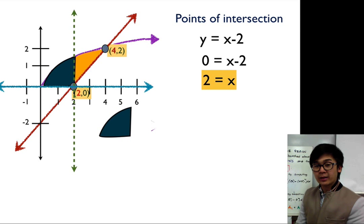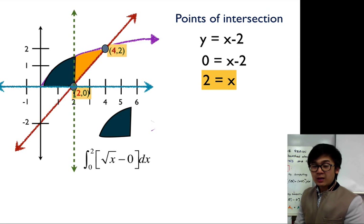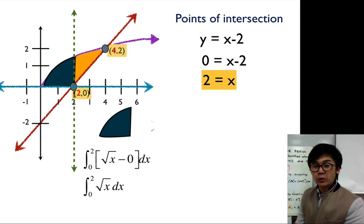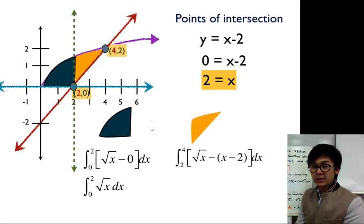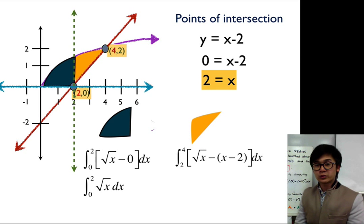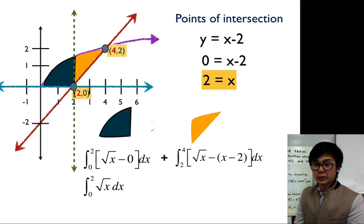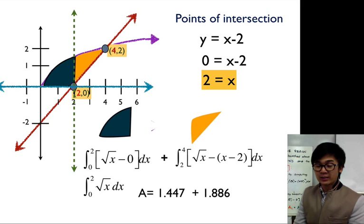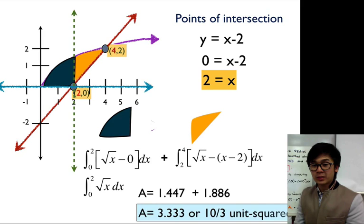To find the area of the left sub-region: integrate square root of x minus 0 dx from 0 to 2. For the right sub-region: integrate square root of x minus (x minus 2) dx from 2 to 4. Evaluating both definite integrals gives 1.447 plus 1.886, for a total area of 3.333 or 10/3 square units. That's how we find areas using two sub-regions.